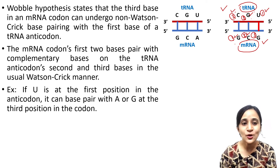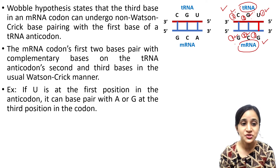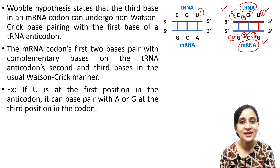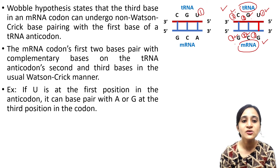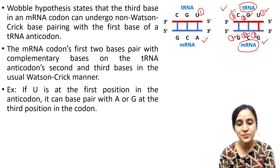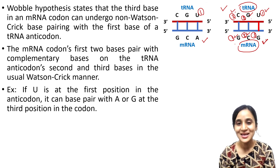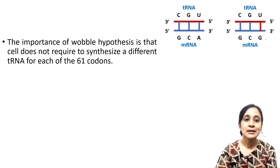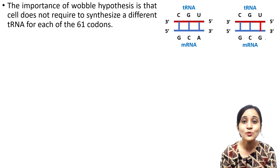For example, if U is at the first position in the anticodon, it can base pair with A or G at the third position in the codon. Here it is base pairing with A — that is usual base pairing — and U can also base pair with G — that is the unusual base pairing. This is the wobble hypothesis.